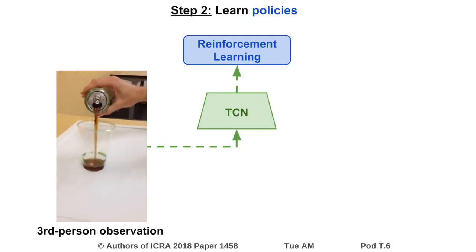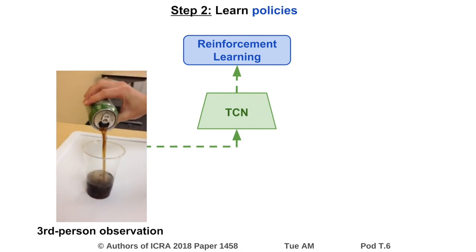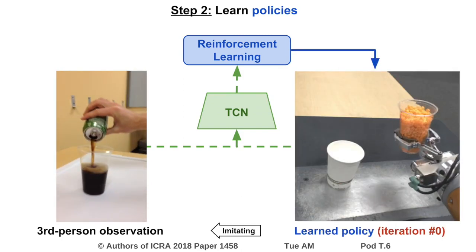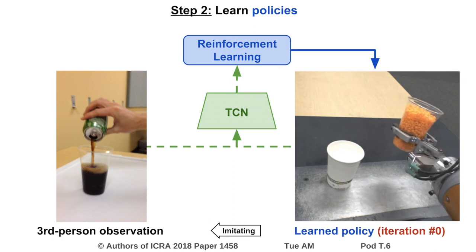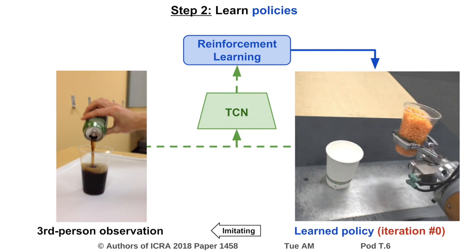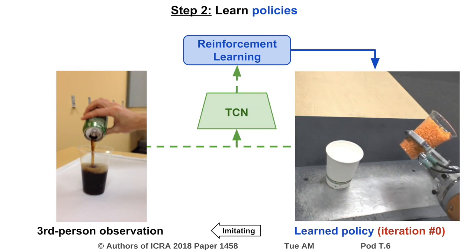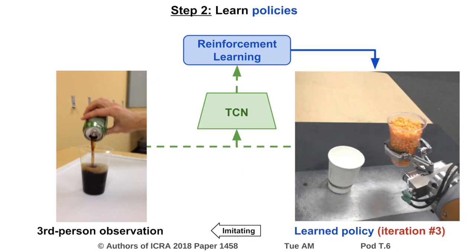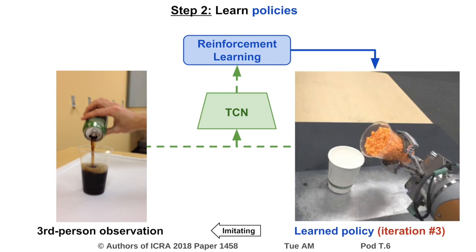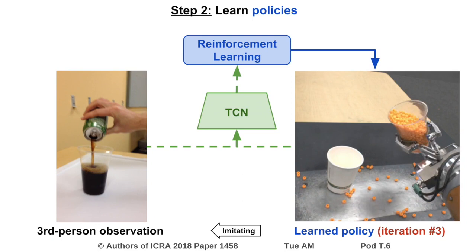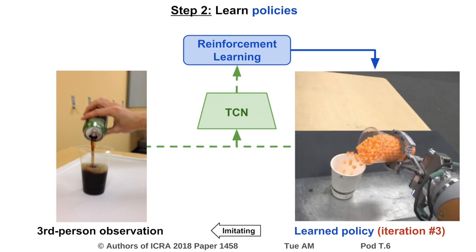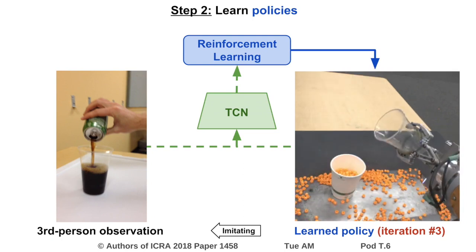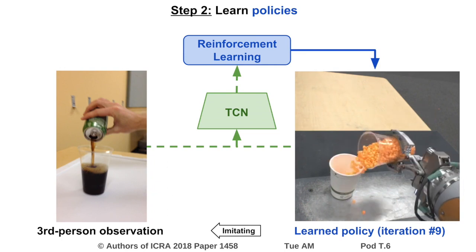The second step of our approach is to use reinforcement learning to learn policies on top of TCN embeddings. Given a single third-person human demonstration, a reward function is constructed that rewards following the progression of the video at the semantic level. The robot arm initially tries random motions, then learns to reuse the controls yielding the highest rewards, and finally converges to reproducing the demonstrated task.